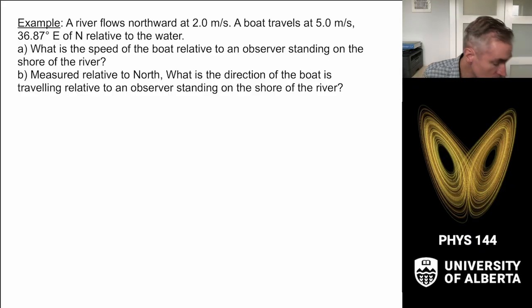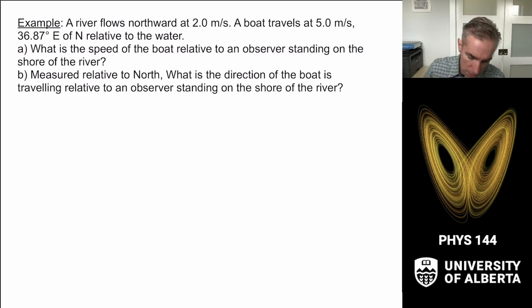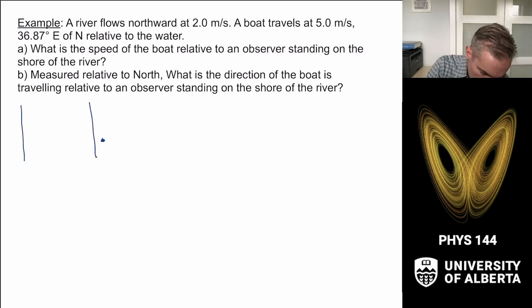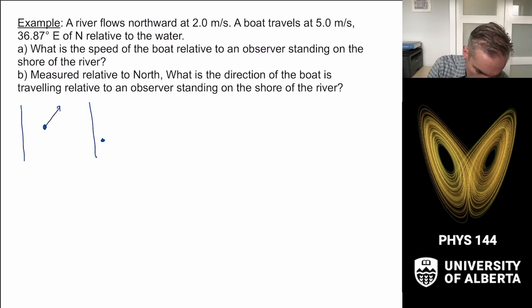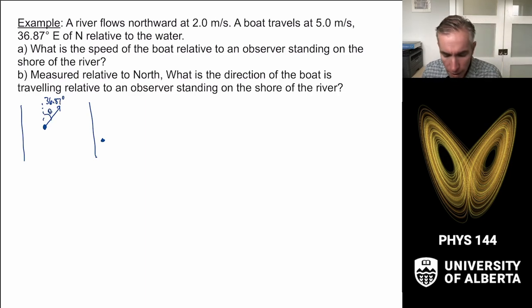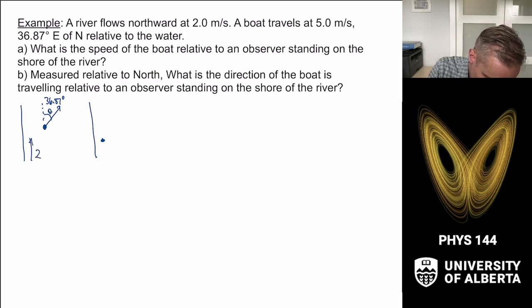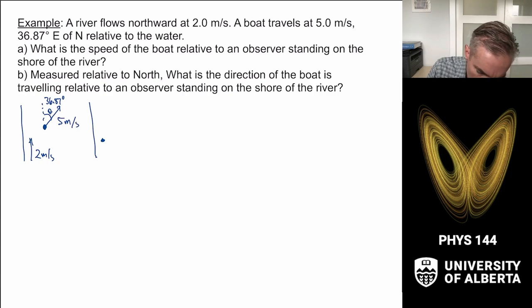Now let's consider a case where a river is flowing northward at 2 meters per second. We have a river, an observer on the bank, and a boat traveling north-northeast relative to the water at an angle of 36.87 degrees — a very special angle. The river is moving at 2 meters per second, and the boat is moving at 5 meters per second. We want to know the speed of the boat relative to the observer standing on the shore and its direction measured relative to north.